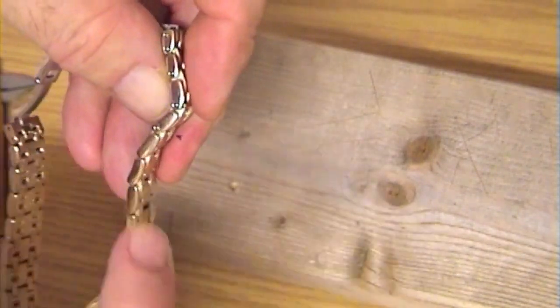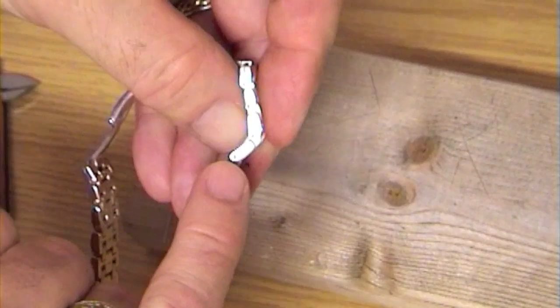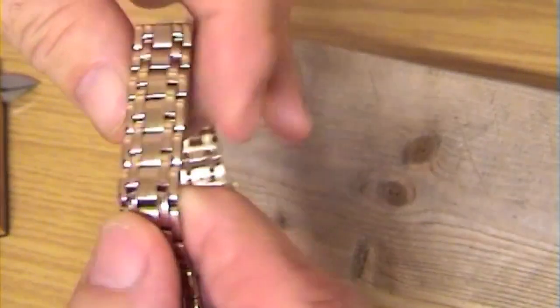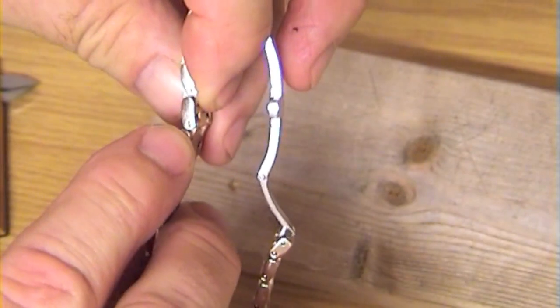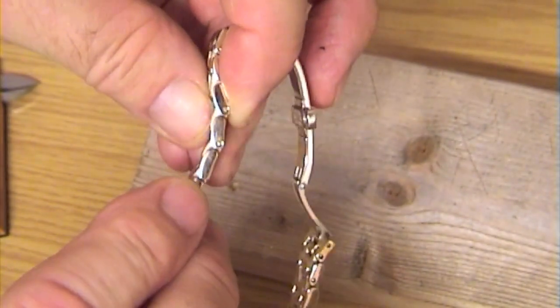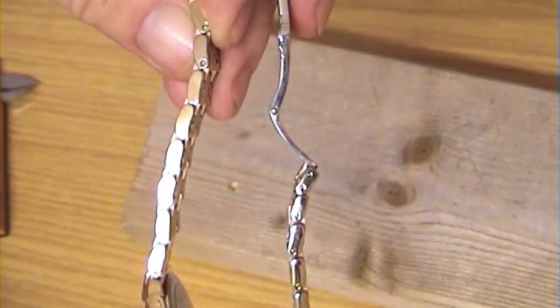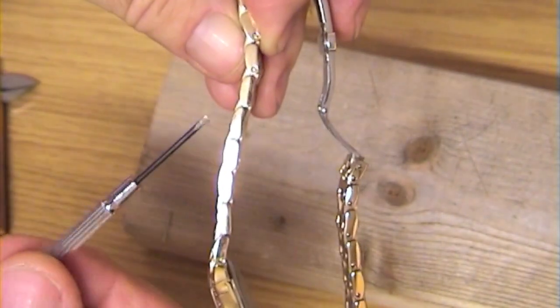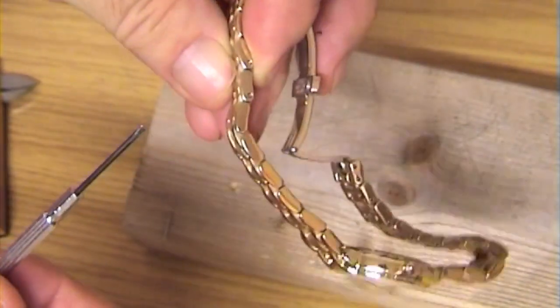Now inside here you've got little pins. Now I didn't know they were pins, I thought they were screws. Because if you look on the other side, they actually look like little screws in there. And I tried using a screwdriver, this one, very small, will fit, but they're not screws.